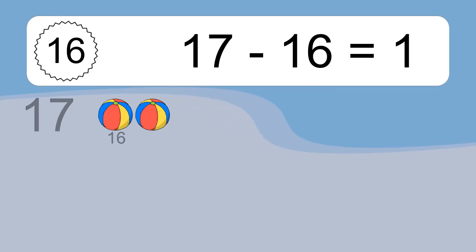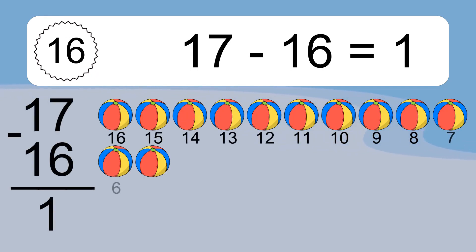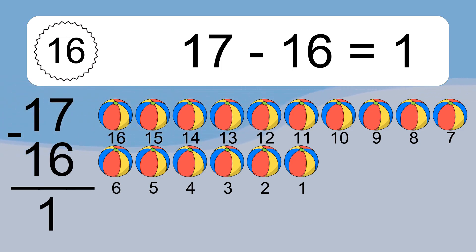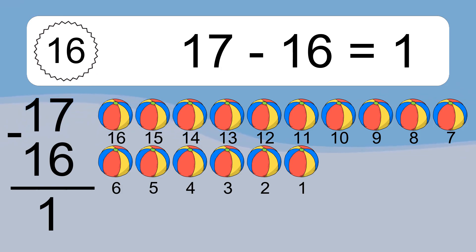17 minus 16 equals 1. Let's count it: 16, 15, 14, 13, 12, 11, 10, 9, 8, 7, 6, 5, 4, 3, 2, 1.